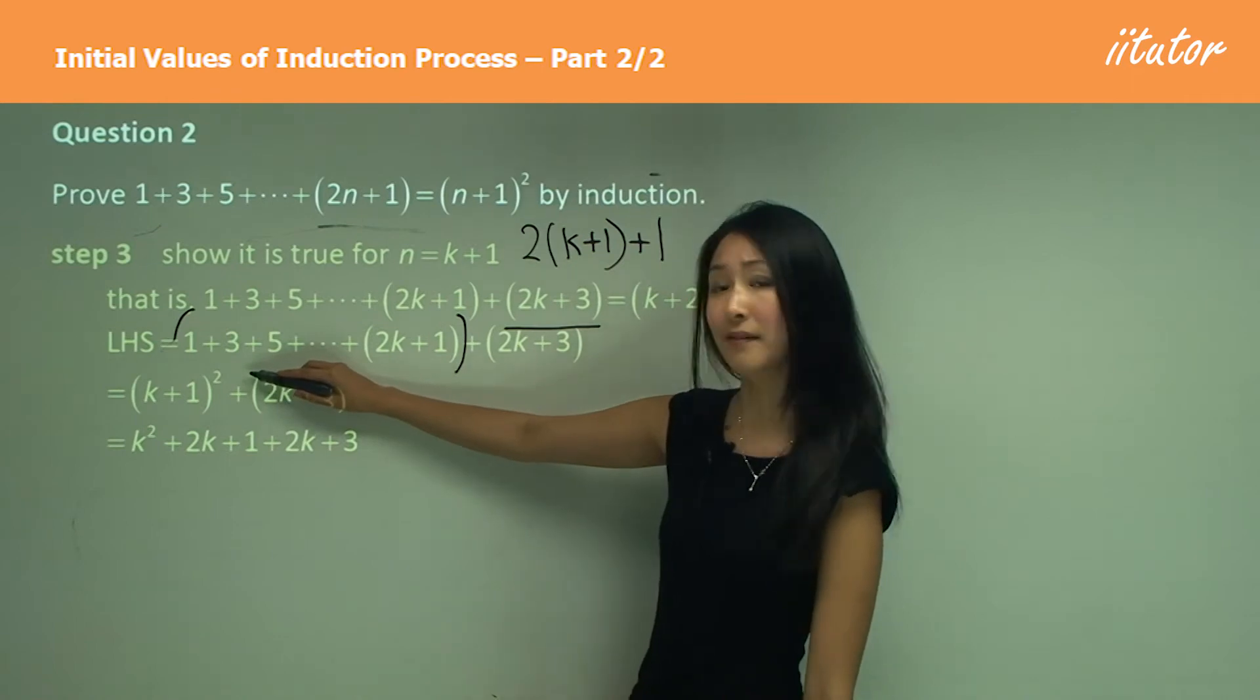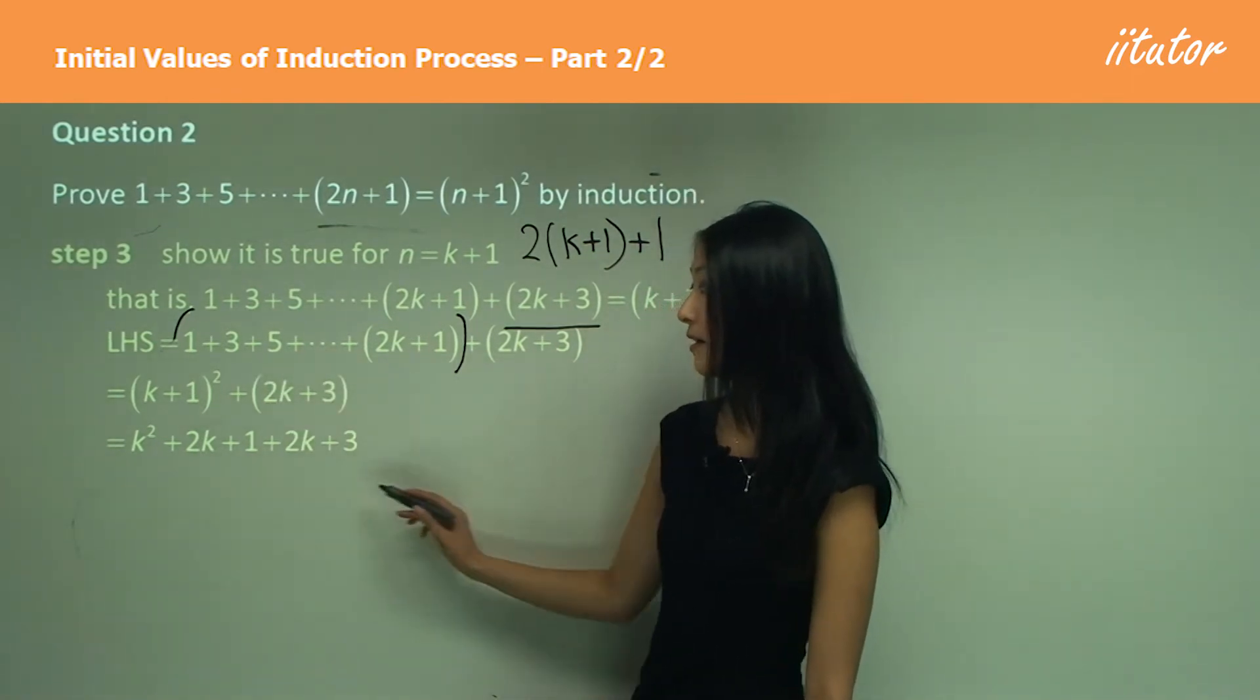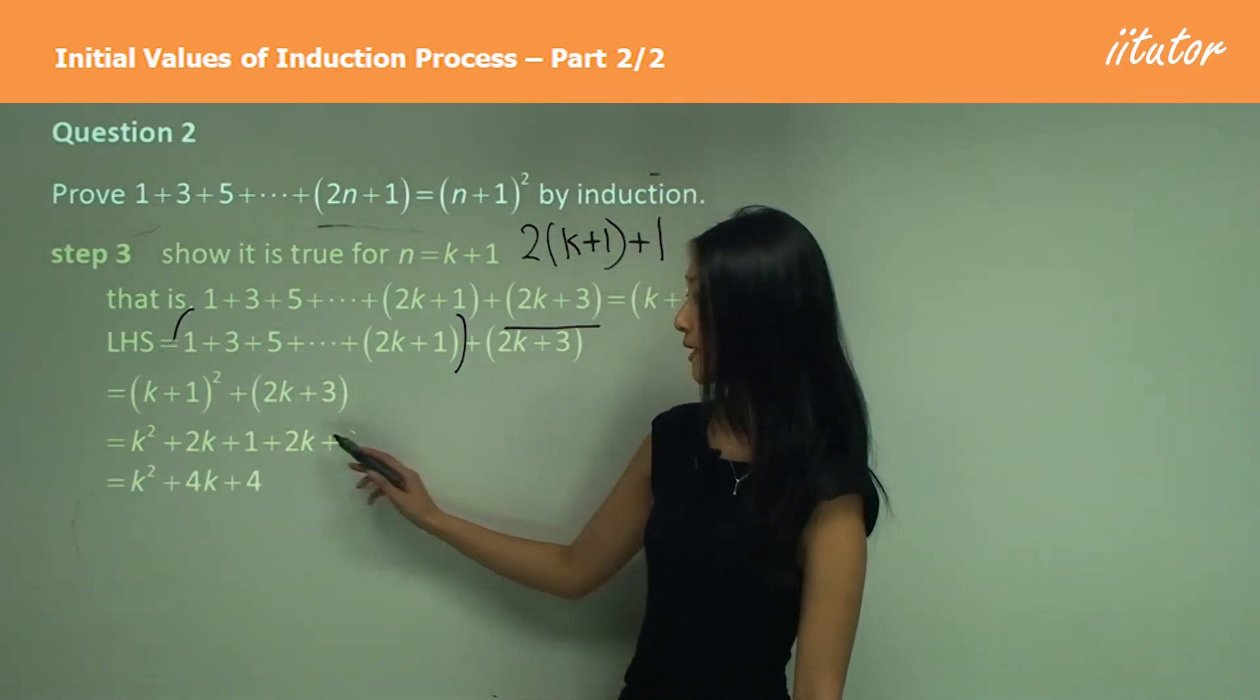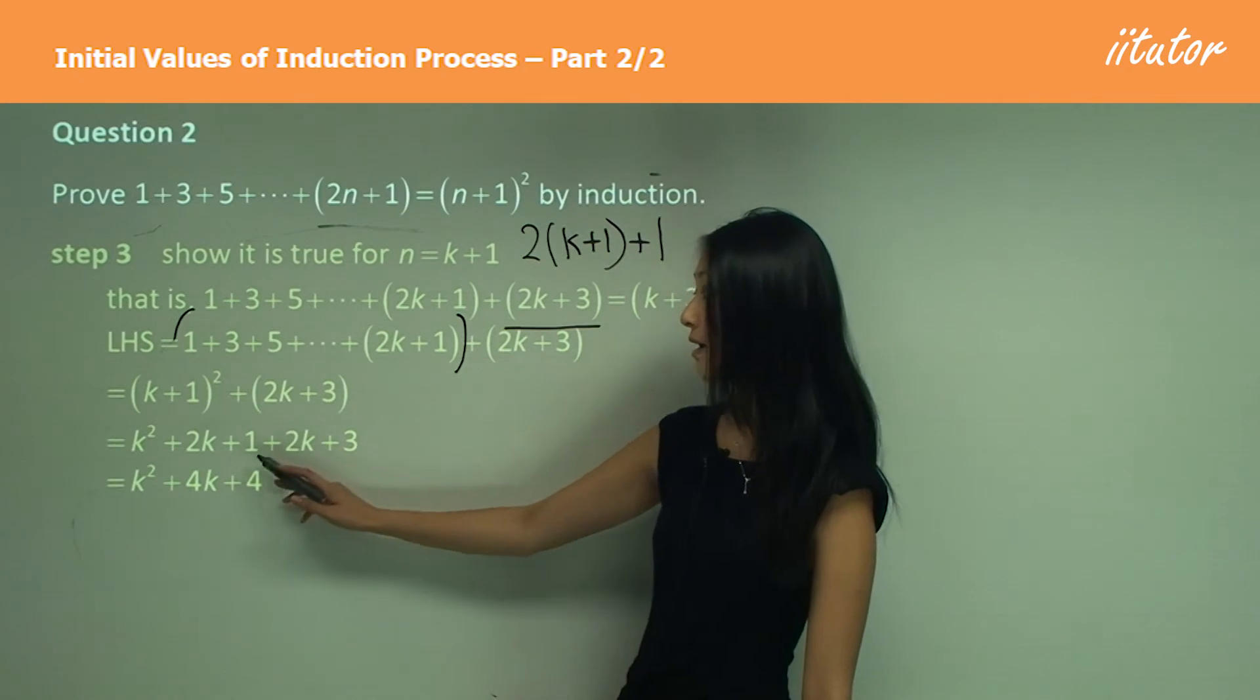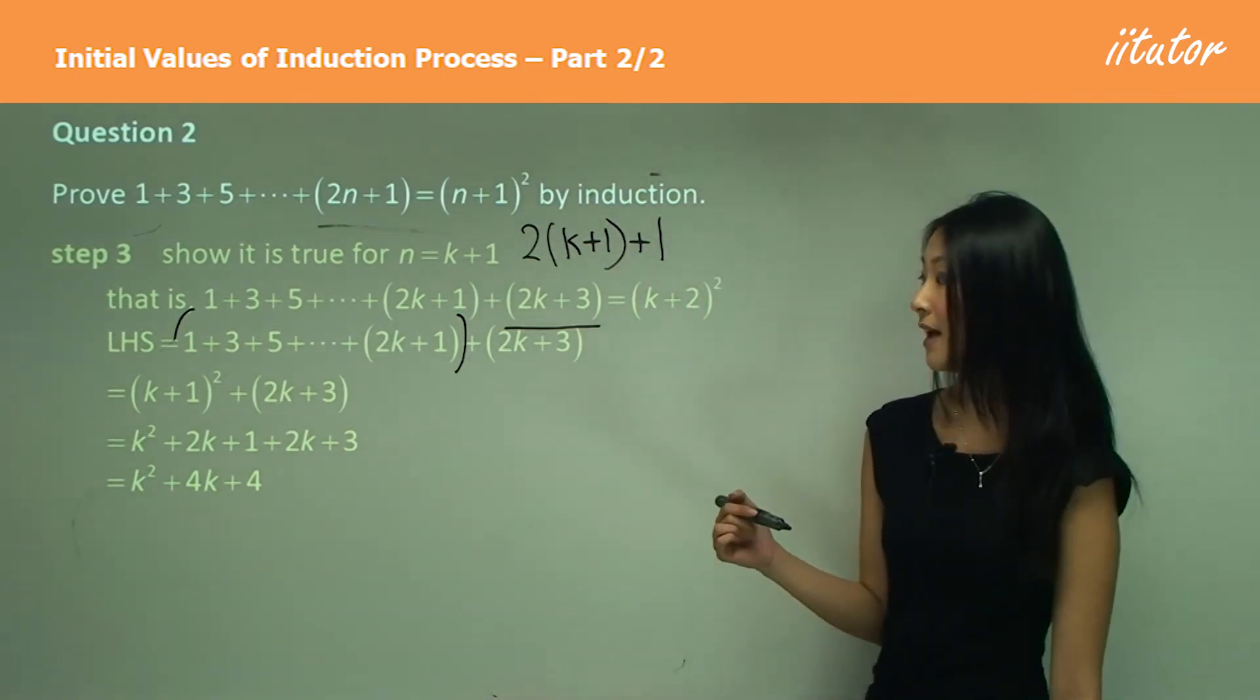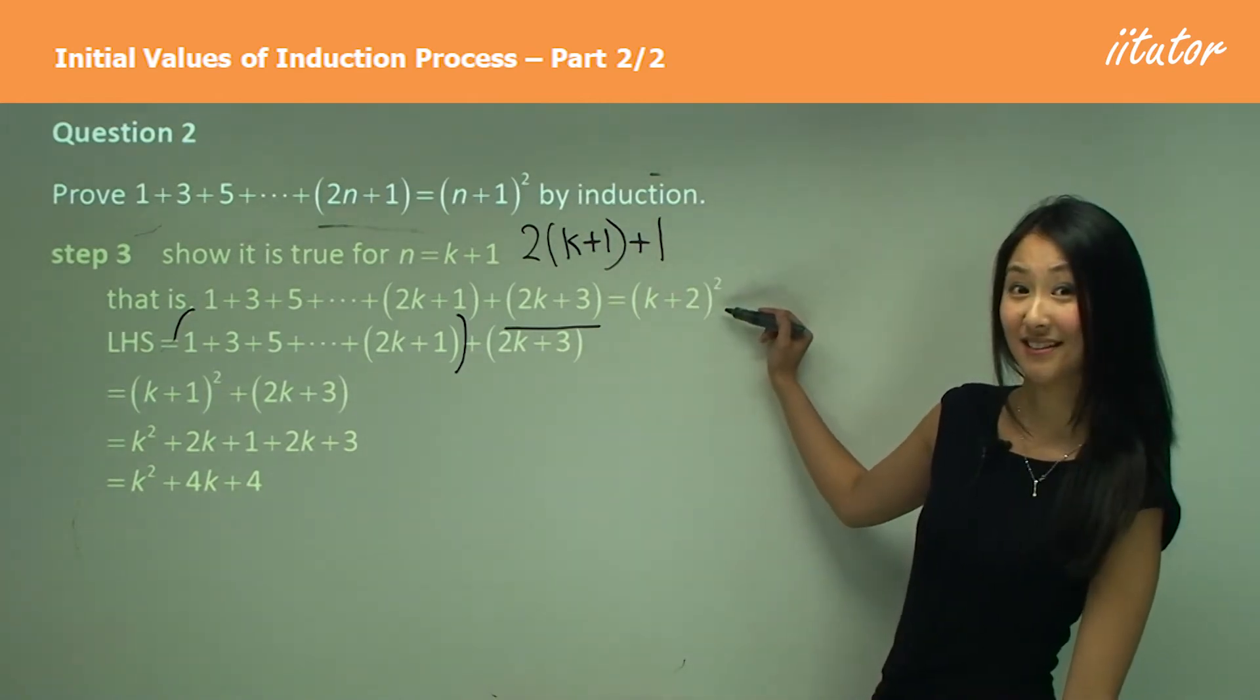So expanding k plus one squared, that becomes k squared plus two k plus one. And now I'm just going to simplify that. So the two k plus two k gives me four k, one plus three gives me the four. So now I have k squared plus four k plus four, which looks very similar to this, doesn't it?